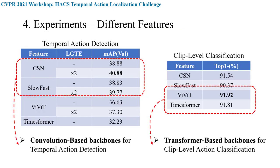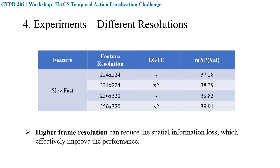Comparing different features, in the temporal action detection table, convolution-based backbones outperform transformer-based backbones significantly. However, in the clip-level classification table, convolution-based is worse than transformer-based. This indicates that backbones with higher classification performance may not generate higher quality proposals, which may guide us to design a backbone more suitable for temporal action detection. We also find that higher frame resolution can improve performance by 1.5% compared to low resolution, since higher resolution reduces spatial information loss.